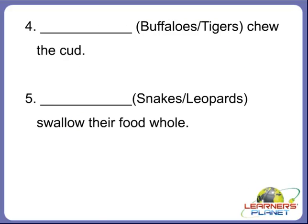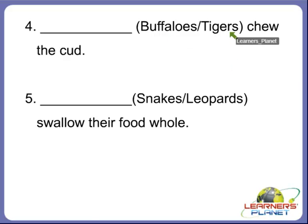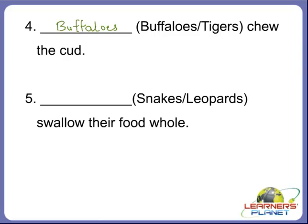Now the next question: dash chew the cud. So who chews the cud — the fellows or tigers? Try to remember, children. Who chews the cud — the domestic animals or the wild animals? Yes, they are the domestic animals. So the answer is the fellows. The fellows chew the cud. Other examples are sheep, giraffes and camels.